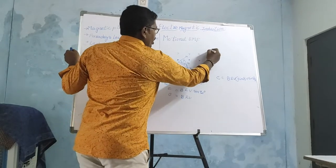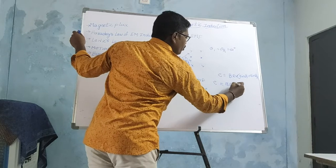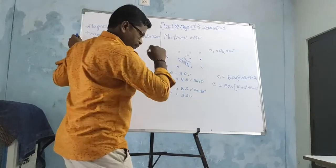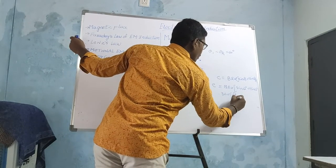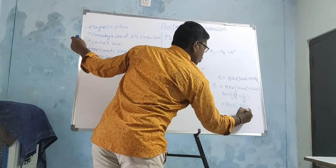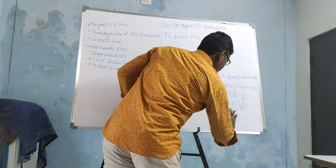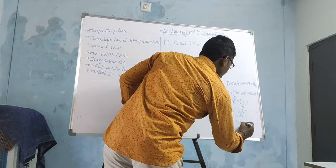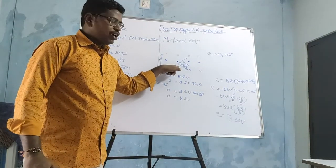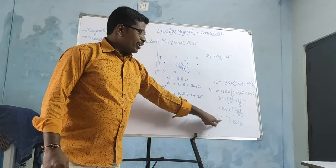Here, theta 1 and theta 2 are both 60 degrees. Then the induced EMF is E = BLV (sin 60° + sin 60°). The value of sin 60° is √3/2. So E = BLV (√3/2 + √3/2) = BLV × 2√3/2. The 2 cancels, giving induced EMF E = √3 BLV. So whenever the conductor is bent with theta 1 = theta 2 = 60°, we get E = √3 BLV.